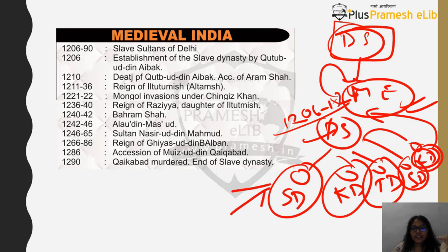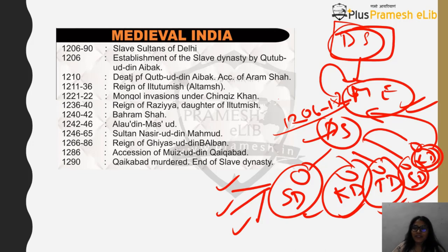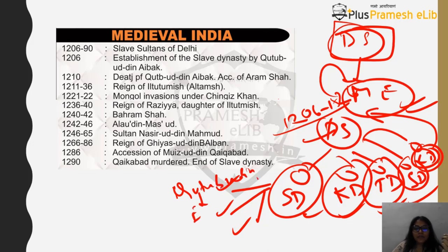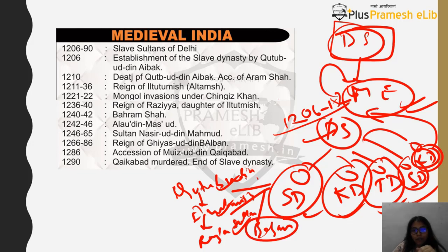Before we go into events, let me give a short overview of how many kings to remember from each dynasty. In the Slave Dynasty, remember four rulers: first the founder Qutbuddin Aibak, then Iltutmish, then Iltutmish's daughter Razia Sultan who ruled for only about four years, and finally Balban. These four rulers all belong to the Slave Dynasty.